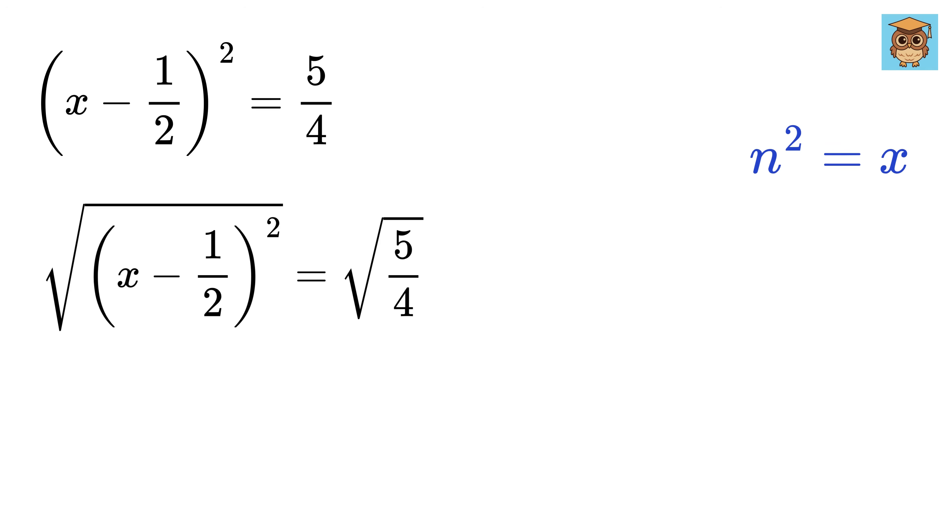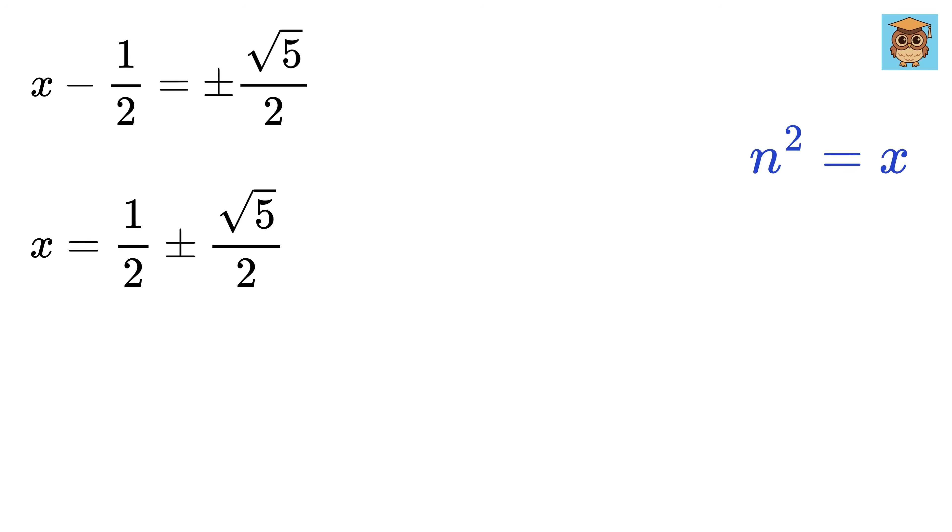Next, we will take the square root of both sides to get x minus half equals plus minus root of 5 by 2. So x will be half plus minus root of 5 by 2.